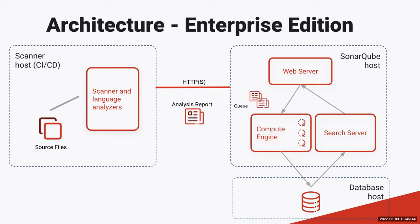The final key component on the bottom left of the diagram is called the compute engine. After the analysis is done, there's some backend processing on the SonarQube server side to calculate final metrics, calculate the quality gate, and do any pull request decoration. What happens when the scanner pushes a report is that the report is dropped onto an internal queue inside the database. The compute engine then pulls those analysis reports off the queue one at a time, performs that final processing, and pushes all of the information into the database so it's available inside the user interface.